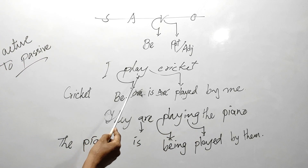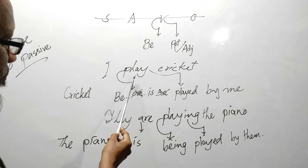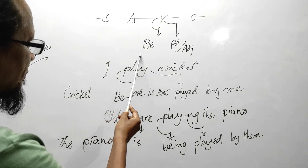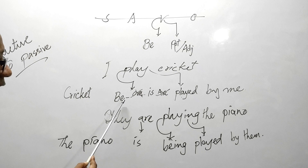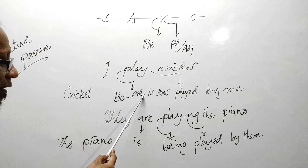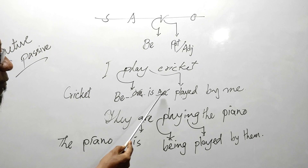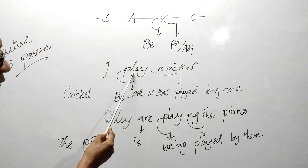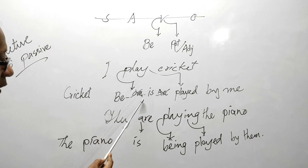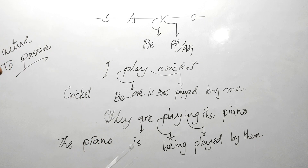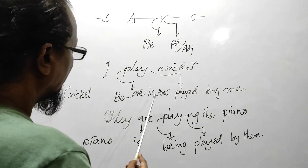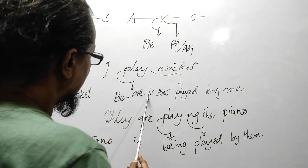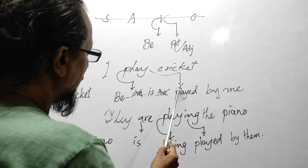So remember one very important thing: this particular principal part should be replaced by the principal part 'B' — am/is/are for the present indefinite. The present form takes am/is/are. Which one comes is determined by the new subject. Here, 'cricket is' — so 'cricket is played by me.'